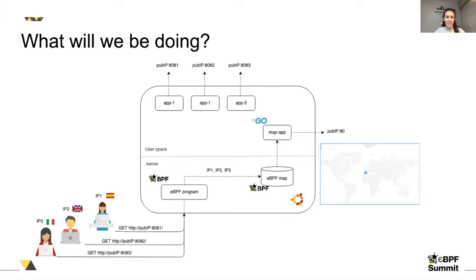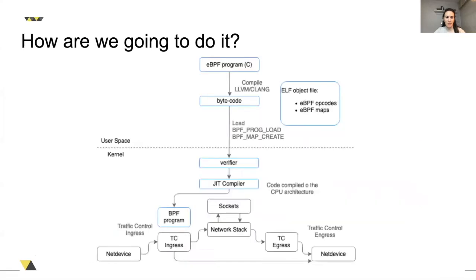Running in the kernel, we get the source IPs from the request to a specific port, write those into an eBPF map, and that can be accessed from a Go userspace application. Using a IP geolocation library, we get the locations from the IPs and paint the points on the map.